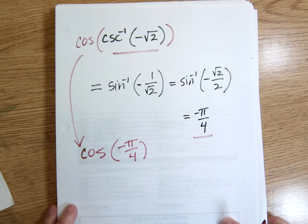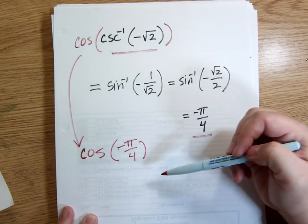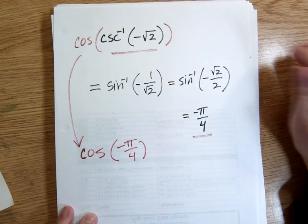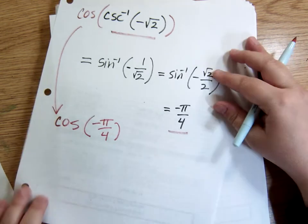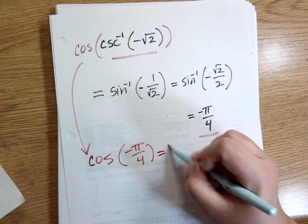So that's what it is. So then I'm just actually going forward. Remember, inverse is working backwards. Now I'm back to going forward. I'm finding the cosine of negative pi over 4, and that's square root of 2 over 2. And that would be my answer.